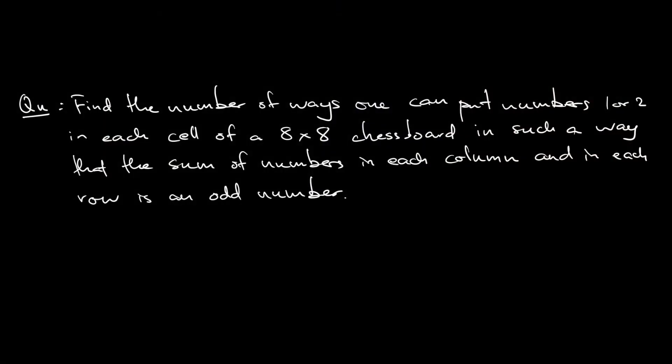Let's read the question together. The question asks us to find the number of ways one can put numbers 1 or 2 in each cell of an 8 by 8 chessboard in such a way that the sum of numbers in each column as well as the sum of numbers in each row is an odd number.